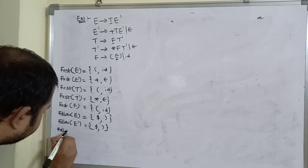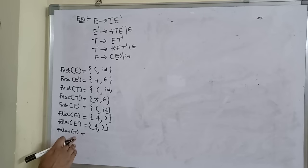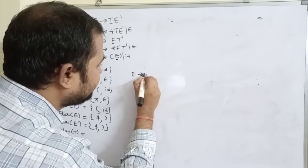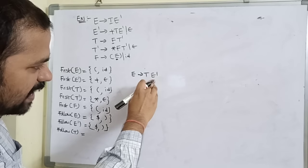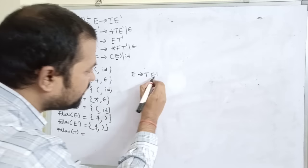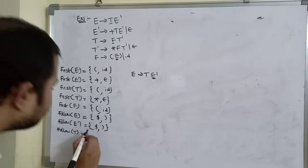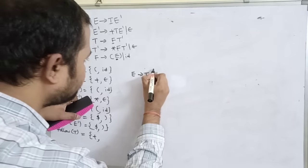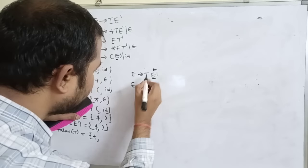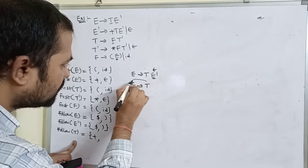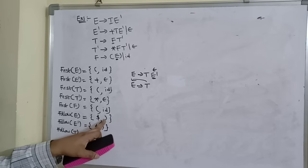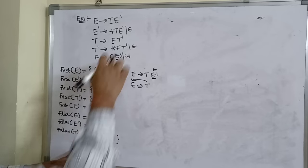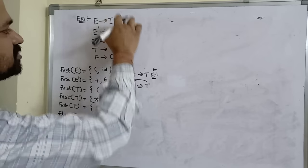FOLLOW of T: searching for T in the right-hand side, we find E implies T·E'. Here E' follows T, so FOLLOW of T includes FIRST of E' = {plus, epsilon}. Since epsilon is present, we substitute E' with epsilon, making it T alone, so FOLLOW of T also includes FOLLOW of E = {dollar, right-parenthesis}. Thus FOLLOW of T = {plus, dollar, right-parenthesis}.